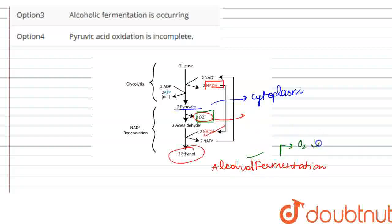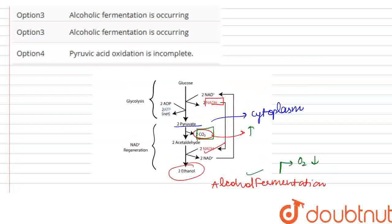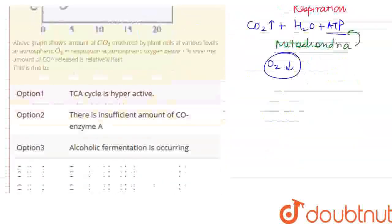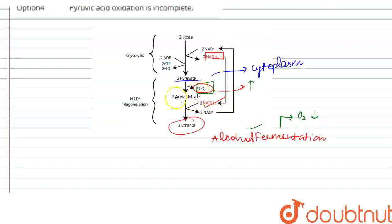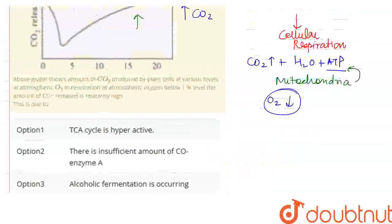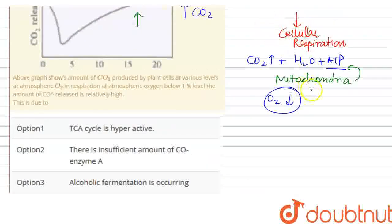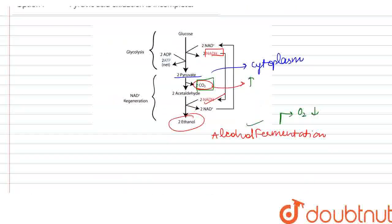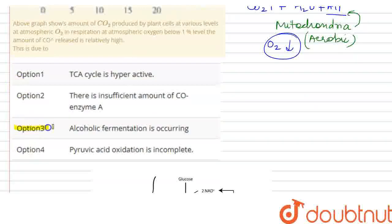In a low oxygen environment, carbon dioxide release increases because the process in mitochondria, which we call aerobic respiration, slows down. So when aerobic respiration is very low, anaerobic respiration or alcoholic fermentation occurs. Therefore, the right answer is option 3: alcoholic fermentation is occurring.